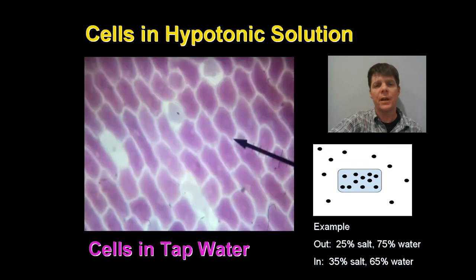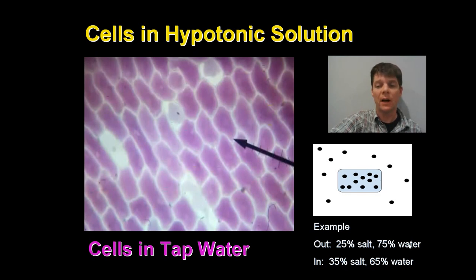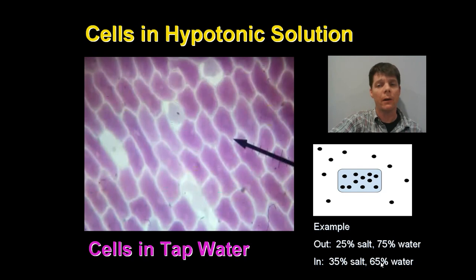Now let's take a look at those cells that are in a hypotonic solution. When cells are in a hypotonic solution, we actually have more dissolved particles on the inside of the cell and fewer dissolved particles on the outside of the cell. This means that on the outside of the cell there will be a higher concentration of water, and on the inside of the cell it will be a lower concentration of water. So because osmosis is the diffusion of water, water will flow from an area of higher concentration to an area of lower concentration. This means for these cells in the tap water — the hypotonic solution — water should flow into the cells.